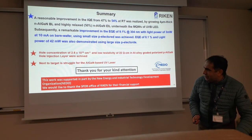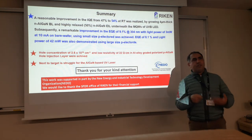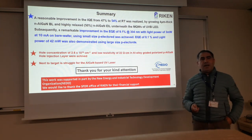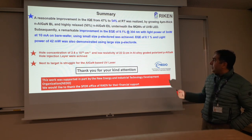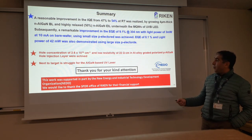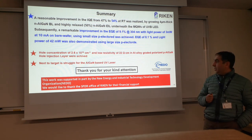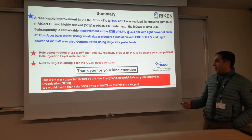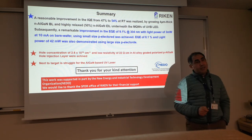With this new layer, in future we hope to further improve our device performance. Here is the summary of results: we got IQE of 54%, EQE of 9.1% with a light output power of 42 milliwatts — this is probably record data. The next target is to work toward AlGaN-based UV lasers. Thank you for your kind attention.